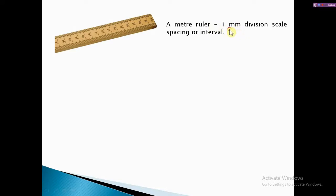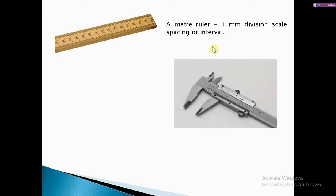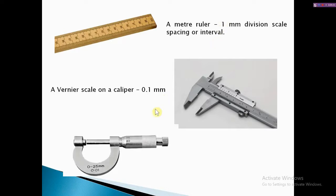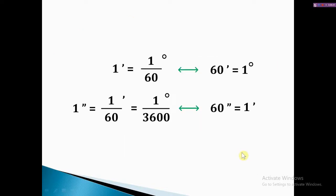A vernier caliper — which you must have seen in your lab — has a least count of 0.1 millimeter, one decimal place better than a meter scale. A micrometer or screw gauge can measure up to 0.01 millimeter. That's what least count is about, and this is the concept we are going to use to find out the least count of a spectrometer as well.